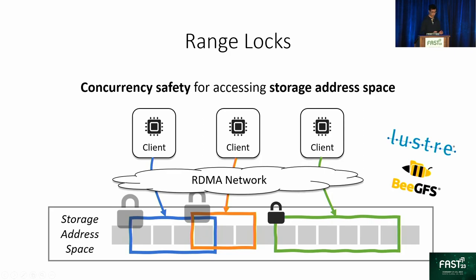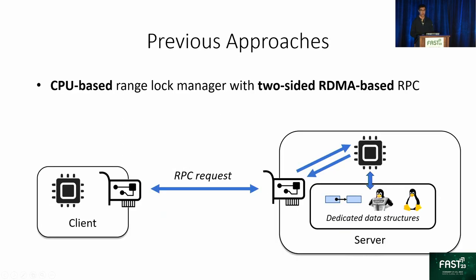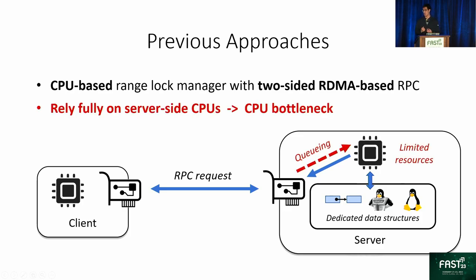For example, in high-performance computing scenarios, the widely used file systems like Lustre and GPFS. Previously, range locks are managed in a two-sided fashion. The clients send requests to the server, and server-side CPUs process all the requests. Inside the server, it can employ many well-designed data structures such as red-black trees in Linux and recently proposed maple trees and lock-free linked lists. However, this lock management scheme can cause serious CPU bottleneck due to high latencies from requests queuing in the NIC and low throughputs from limited CPU resources.